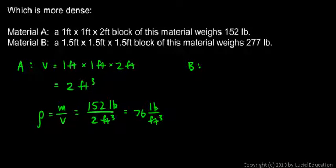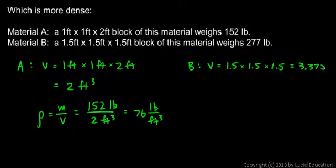Now material B, the volume for material B is 1.5 times 1.5 times 1.5 and we multiply that out and that comes out to 3.375. And all of those measurements are in feet. So this is 3.375 cubic feet.